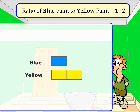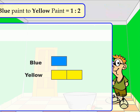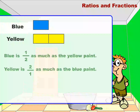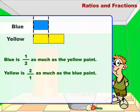This model helps us visually understand the proportion between the blue paint and yellow paint. From this model, it's clear that the yellow paint is twice as much as the blue paint, or the blue paint is half as much as the yellow paint. We can say that Jack used 1 over 2, or half as much blue paint as yellow paint. We can also say that Jack used 2 over 1, or 2 times as much yellow paint as blue paint.